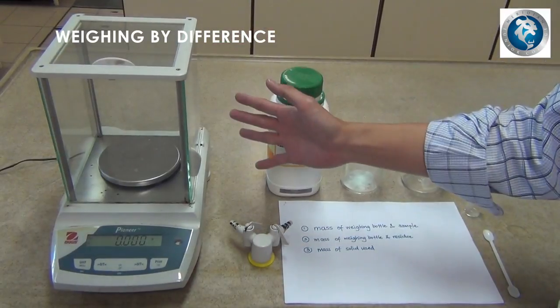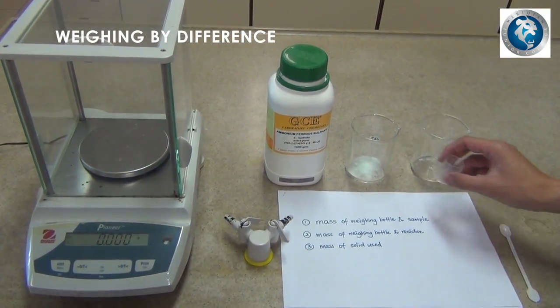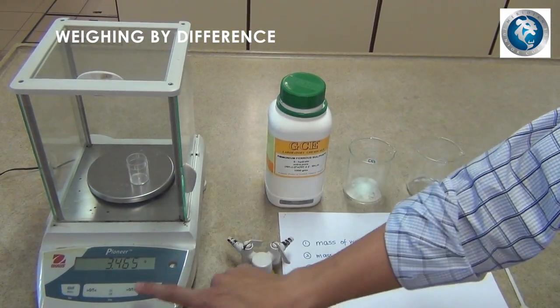First, ensure that all the windows are closed and tare the weighing balance. Next, put the weighing bottle in and tare.